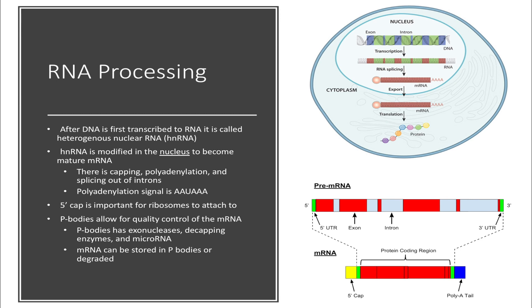Now let's talk about the other end, the 3' end, which is shown over here as well as over here. The 3' end of the RNA is polyadenylated, meaning lots of adenyl groups are added to the end. This is important to prevent the degradation of mRNA in the cytoplasm. Something that might come up on your tests is what is the signal for polyadenylation — this is AAUAAA.